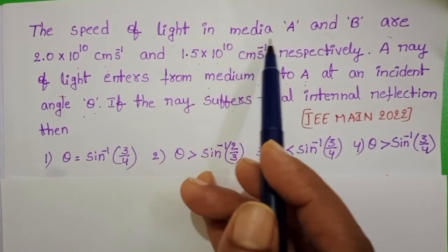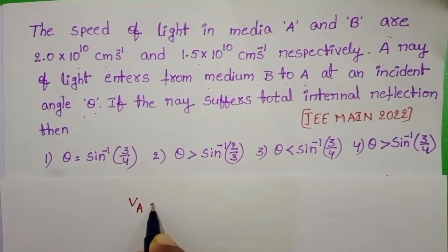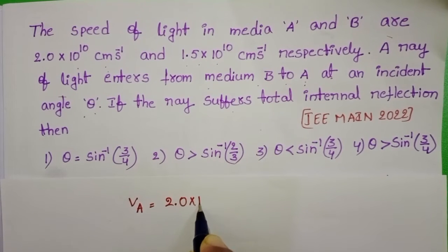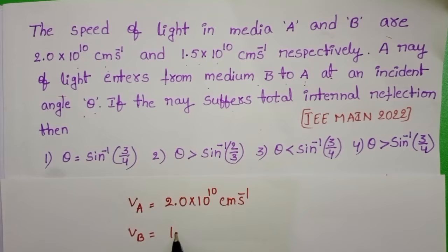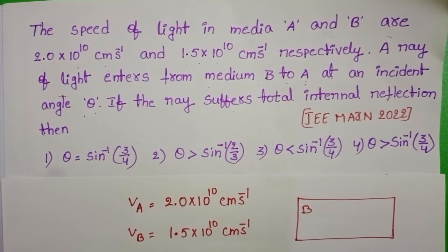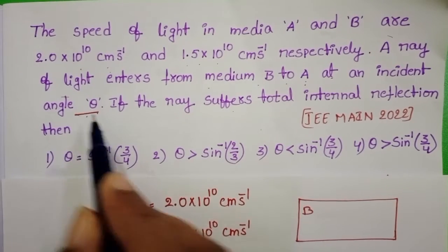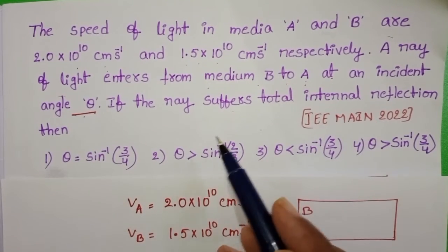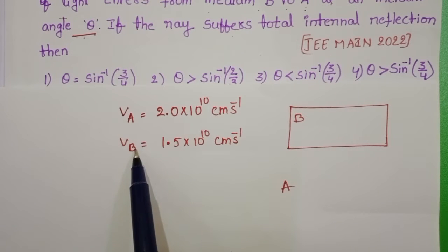The speed of light in medium A and B are: V_A = 2.0 × 10^10 centimeter per second and V_B = 1.5 × 10^10 centimeter per second. At an angle theta, if the ray suffers total internal reflection, the speed of light in medium A is greater than medium B.